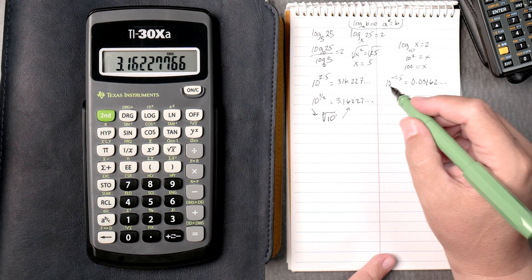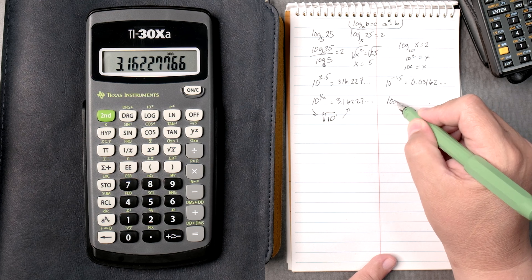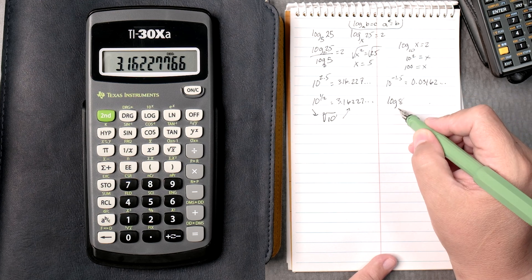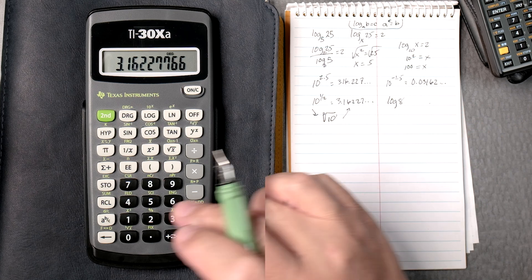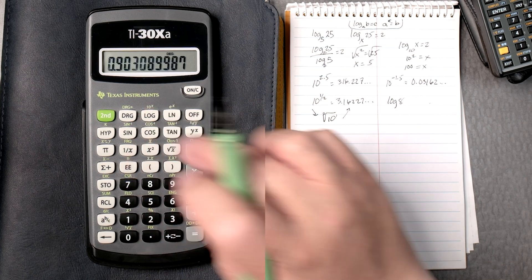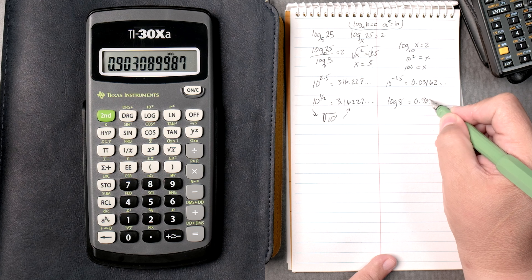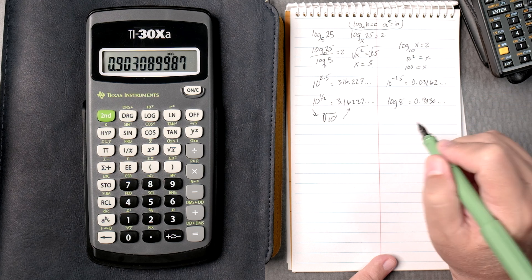So, next thing is about log of 8. If it doesn't have a base, we assume it's a 10. So, 8 log, 0.9030, and so forth.